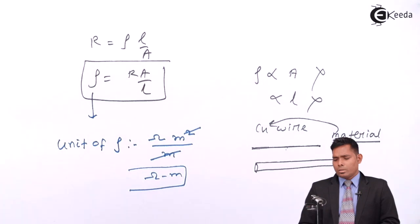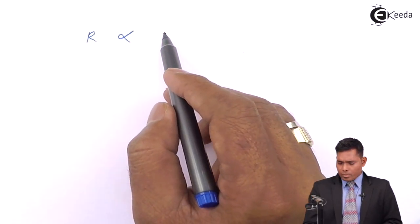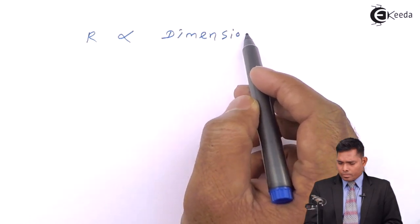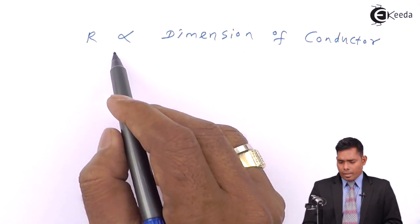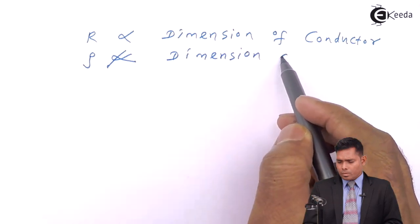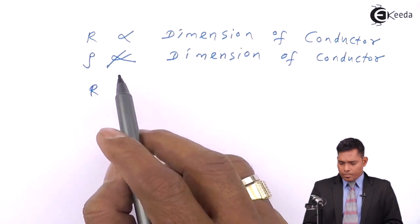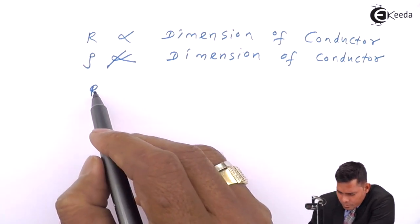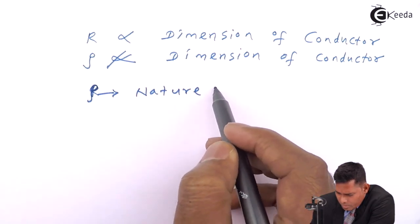Resistance depends on the dimensions of the conductor, but specific resistance does not depend on the dimensions of the conductor. This rho depends on the nature of the material.